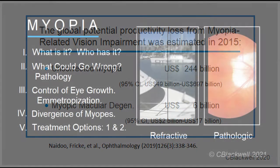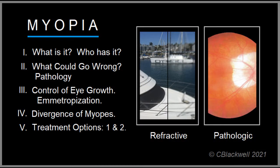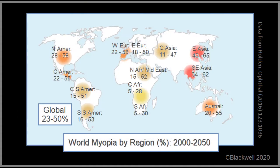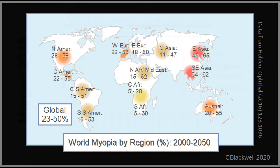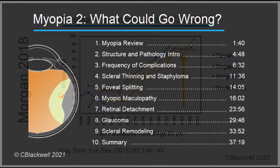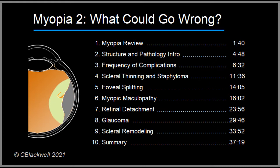In our exploration of myopia, we break it down into five different subjects. In number one, we discussed what myopia was and how widespread it was around the world, with East Asia in particular reaching epidemic levels. Our plan for this video is to review the complications associated with myopia, ask how often they happen, and what impact they have on vision.